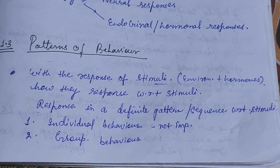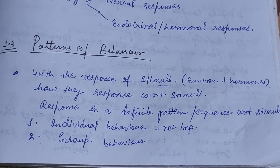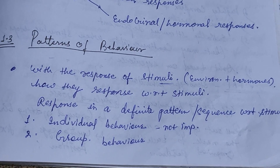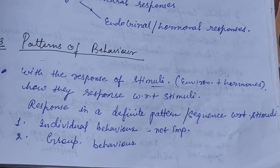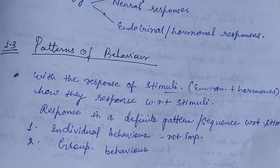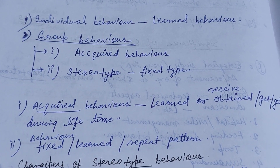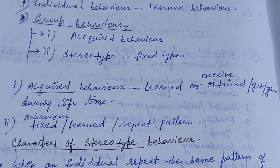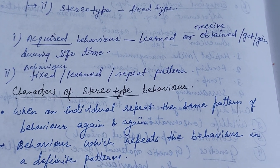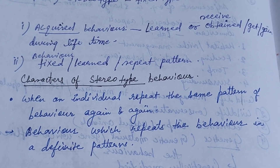Patterns of behavior refers to how animals respond to stimuli — both environmental and hormonal. The response in a different pattern or sequence with respect to stimuli is known as patterns of behavior, which may be individual or group. Individual behavior is learned behavior, while group behavior may be acquired or stereotype. Acquired behavior is learned, received, or gained during their lifetime.